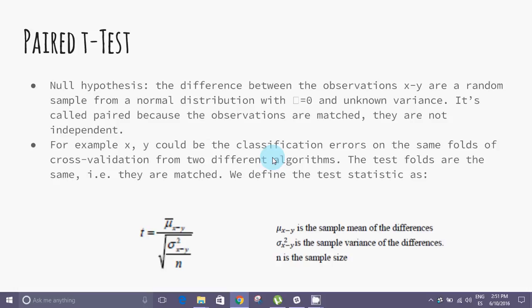They are not independent. For example, X and Y could be classification errors on the same folds of cross-validation from two different algorithms. The test folds are the same, i.e., they are matched.